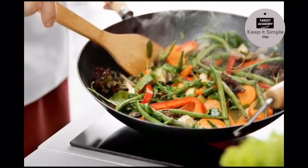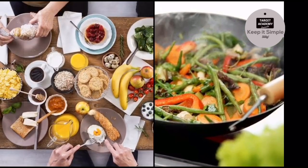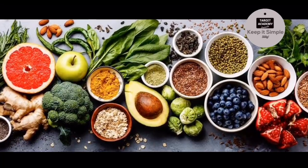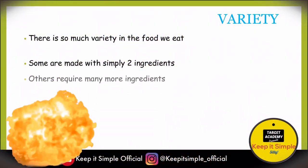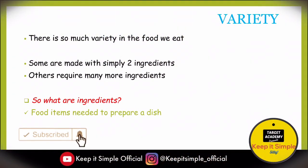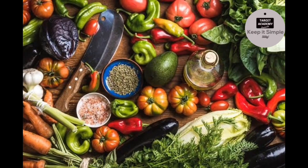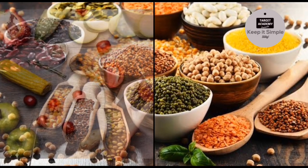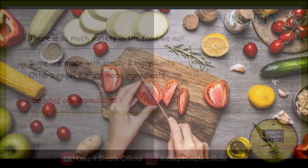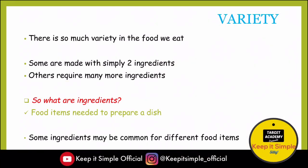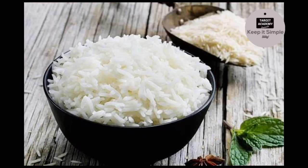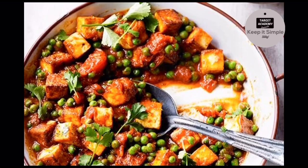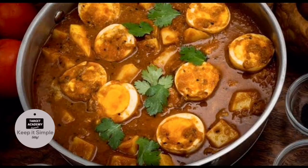Some dishes are simply two ingredients, while others need many ingredients to prepare. So what are ingredients? Ingredients means all the food items needed to prepare a dish. Whatever food items you need to prepare a dish, all those are called ingredients. For example, to prepare boiled rice, there are simply two ingredients: raw rice and water. But if you have to make a vegetable dish, you will need a lot of ingredients.